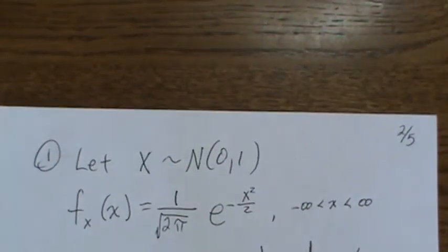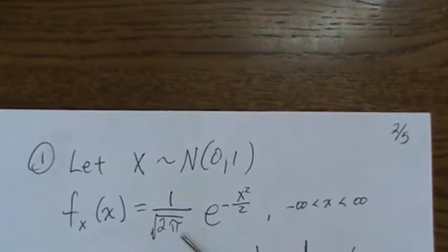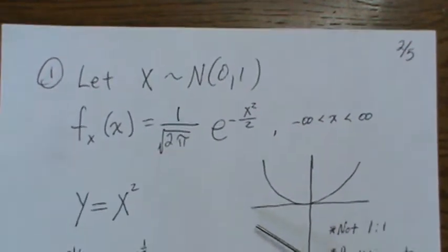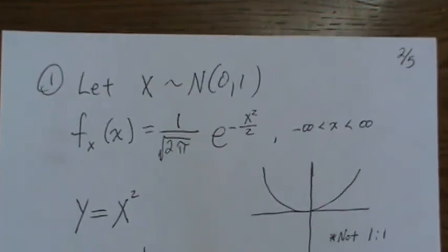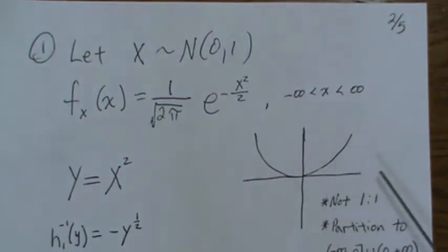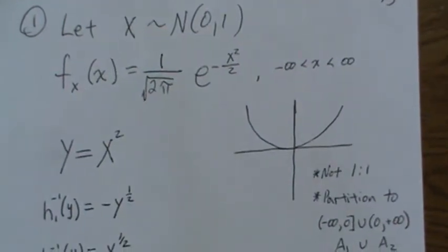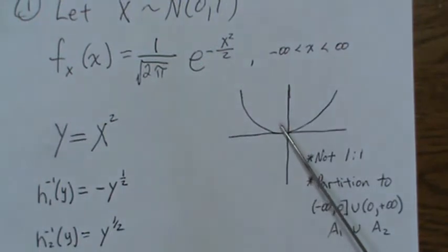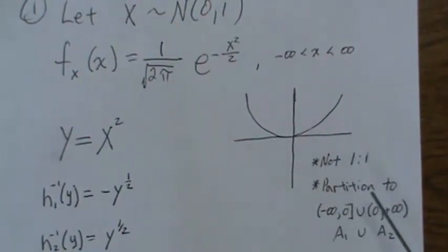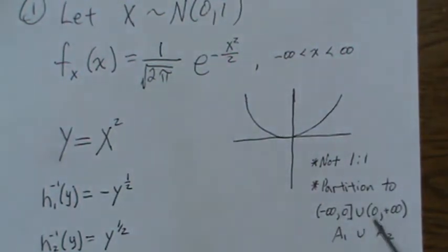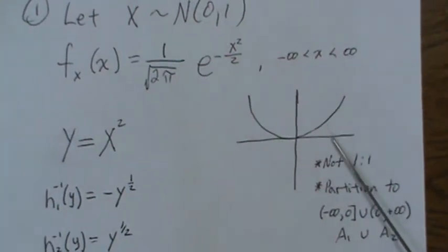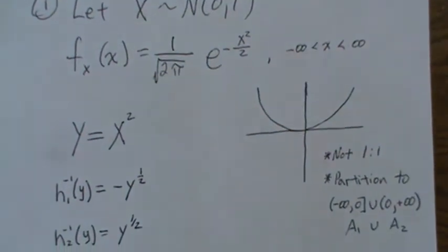So here we have, we're going to let X be standard normal and this is the density of a standard normal. We're going to let Y equal X² but notice that Y equals X² is not a one-to-one function, so it doesn't have a direct inverse. To calculate this we have to partition our X into disjoint regions that make up the whole. Here we're going to go from 0 to negative infinity and 0 to positive infinity. We're going to call them region A₁ and A₂. Then it each has an inverse over that specific region, and that's how we're going to calculate this density.